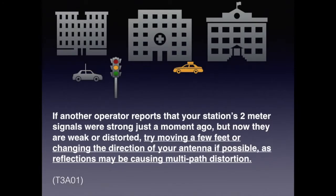Sometimes when we are mobile our signal is reflected, creating a multipath back to the repeater. Sometimes our signal is just having a difficult time hitting the repeater due to obstacles or sources of interference. This can often be corrected by simply moving a few feet in either direction or changing the antenna orientation. For the exam, if another operator reports your station's two meter signals were strong just a moment ago but now are weak and distorted, try moving a few feet or changing the direction of your antenna, as reflections may be causing multipath distortion.